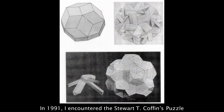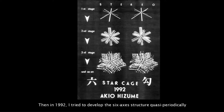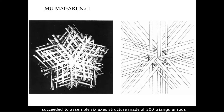This is the train gallery — I displayed all of the models there, so please watch all the models on Friday. In 1991, I encountered the Shorty Coffins puzzle, and I remembered Jupiter. Then in 1992, I tried to develop the six-axis structure periodically, and I succeeded in assembling a six-axis structure made of 300 triangular rods.